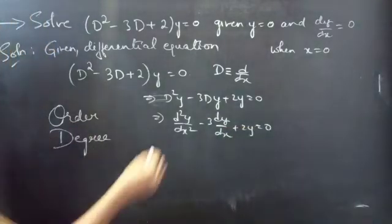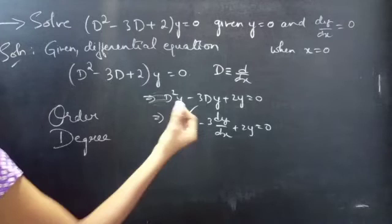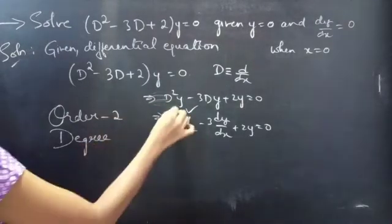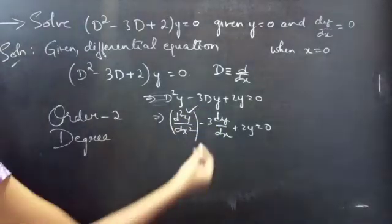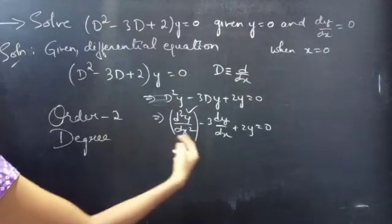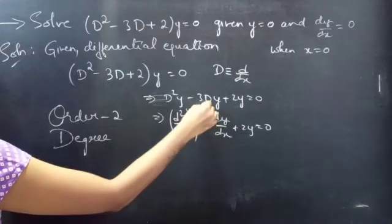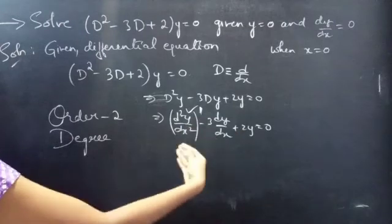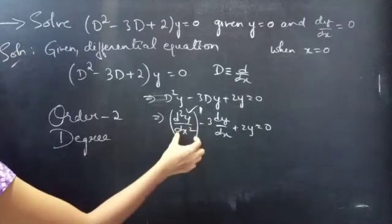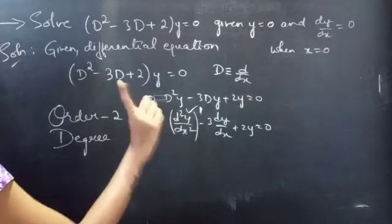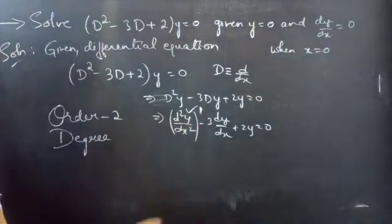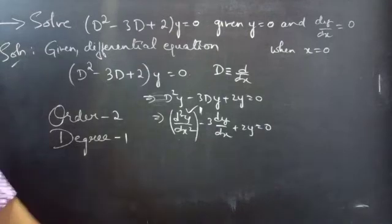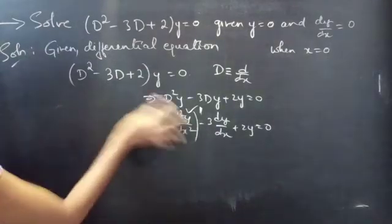Here the highest derivative is d²y/dx², so the order will be 2. The degree will be the highest power of the highest derivative. Since we have only one d²y/dx² term, the power of the highest derivative is 1, so the degree is 1.